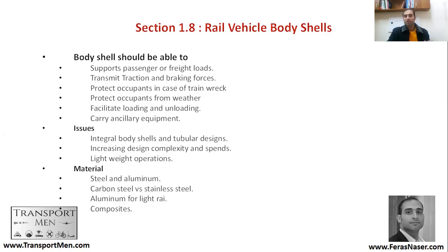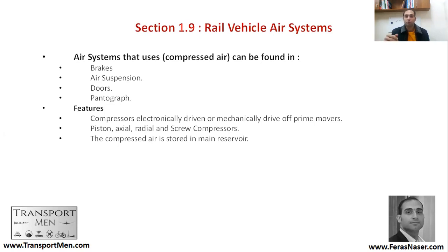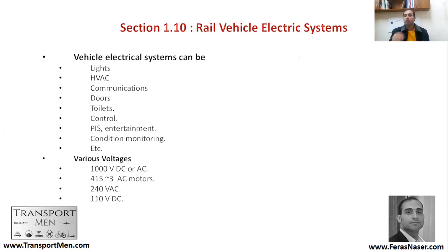For the rail vehicle air system, there are a group of systems that use compressed air: brakes, air suspension, doors, and pantographs. Compressors can be electronically or mechanically driven. There are different types — piston, axial, radial, and screw compressors — and the compressed air is stored in a main reservoir on the rail vehicle.